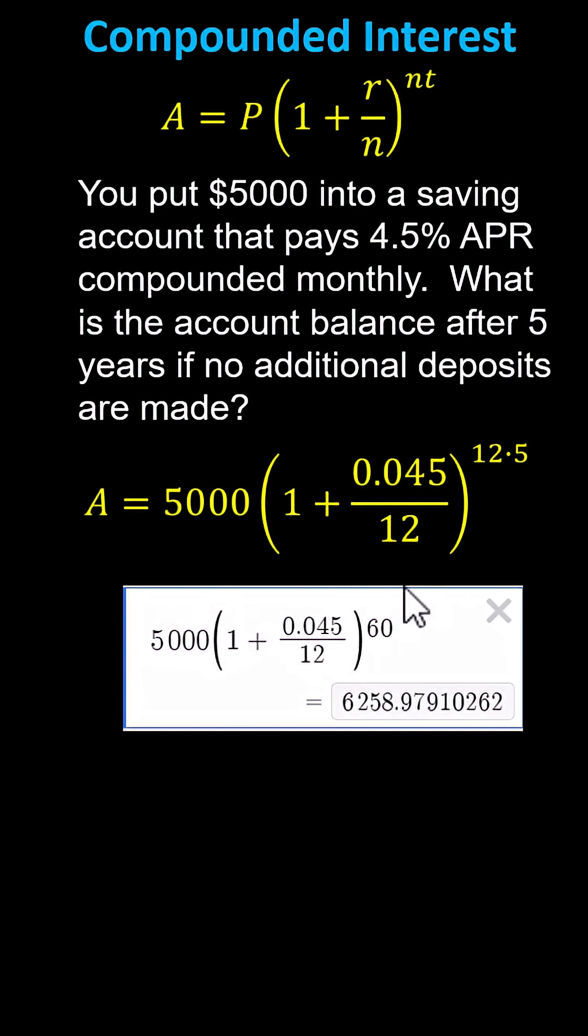Notice I entered the exponent as 60 rather than as a product. After 5 years, the account balance is $6,258.98 to the nearest cent.